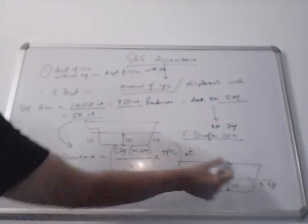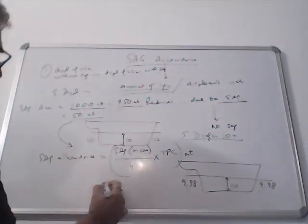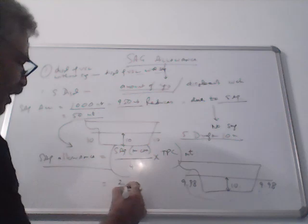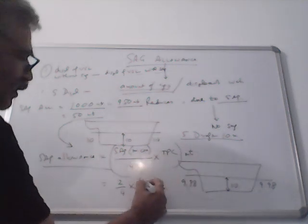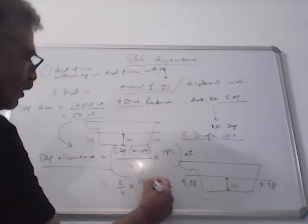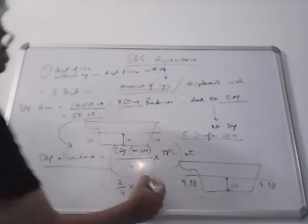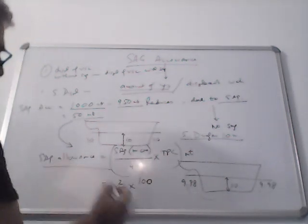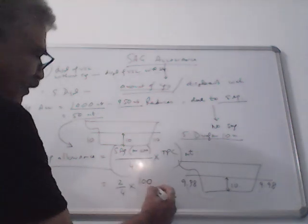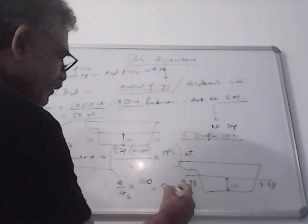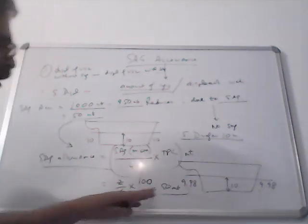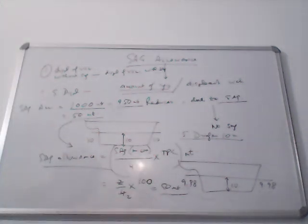So in this case SAIC is 2 centimeters. So SAIC allowance will be equal to 2 divided by 4. Let's say TPC of the vessel is 100 metric tons. So SAIC allowance will be 2 divided by 4 times 100, which will come to about 50 metric tons. So cargo loadable will be reduced by 50 metric tons.